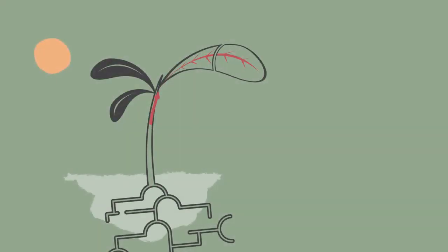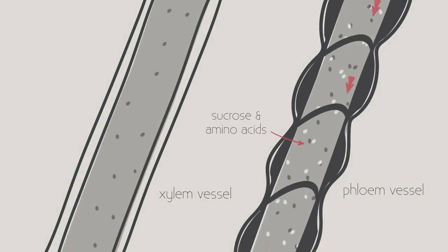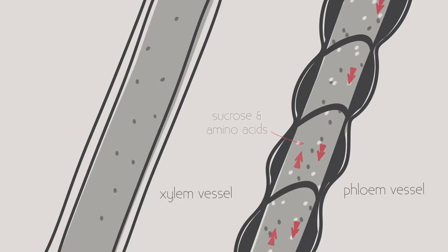We're nearly there! We know how water moves up the plant in the xylem, with some minerals dissolved in the water, and we know that sugars move up and down the plant in the phloem, so all that is left to discover is exactly how the phloem works.